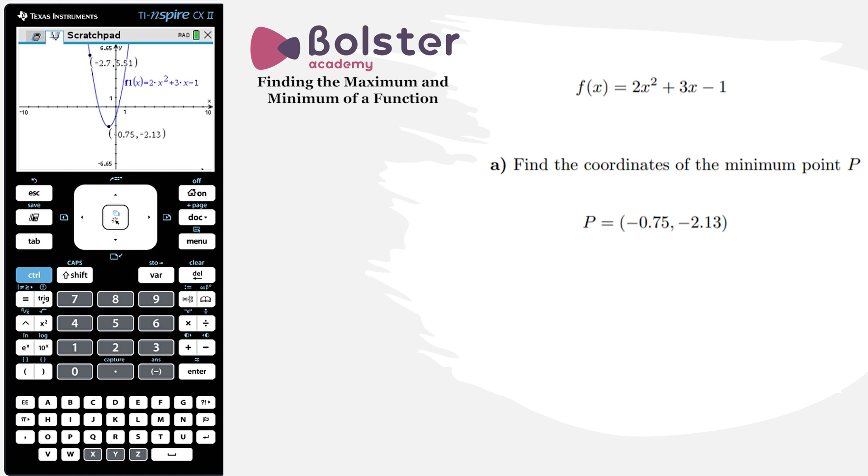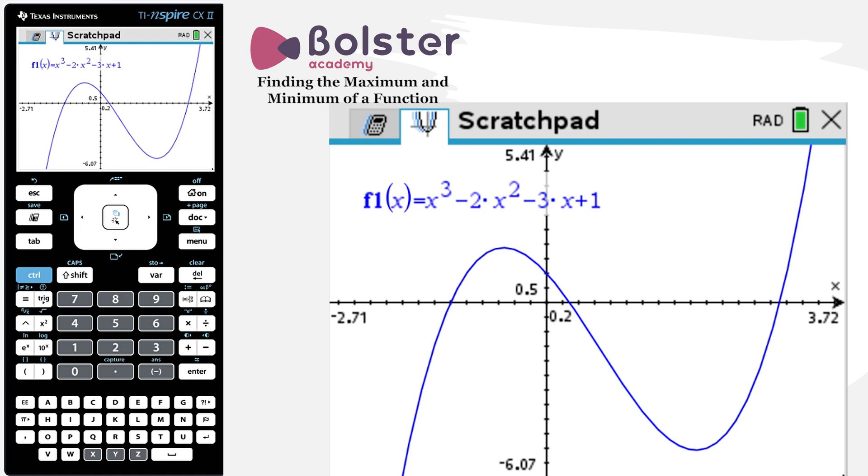So this is not a local maximum. It's not a turning point, but it is the maximum within that range. So we have to be careful how we use the function on our calculator. So where is this likely to come up in a question?